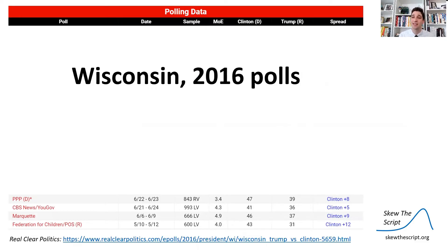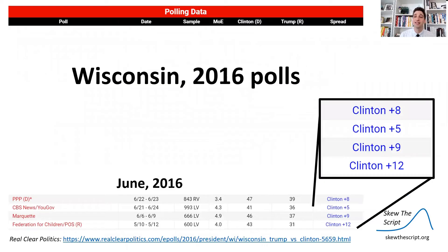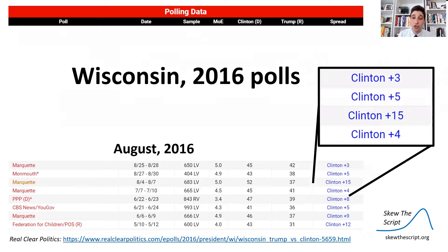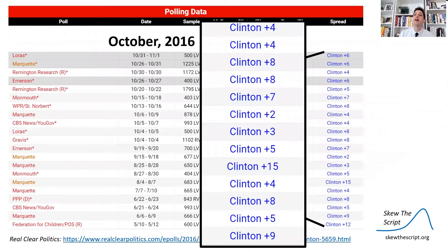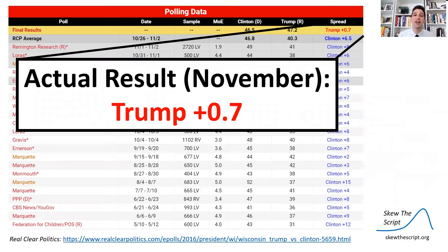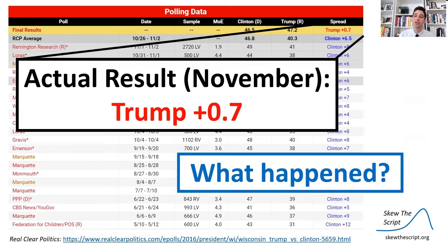2016 was the contest between Hillary Clinton and Donald Trump, and in Wisconsin, the polls consistently showed Clinton ahead — in June, in August, in October. For basically every poll leading up to election day in November, Clinton was shown to be ahead, yet on election day, Trump won the state. So what happened?